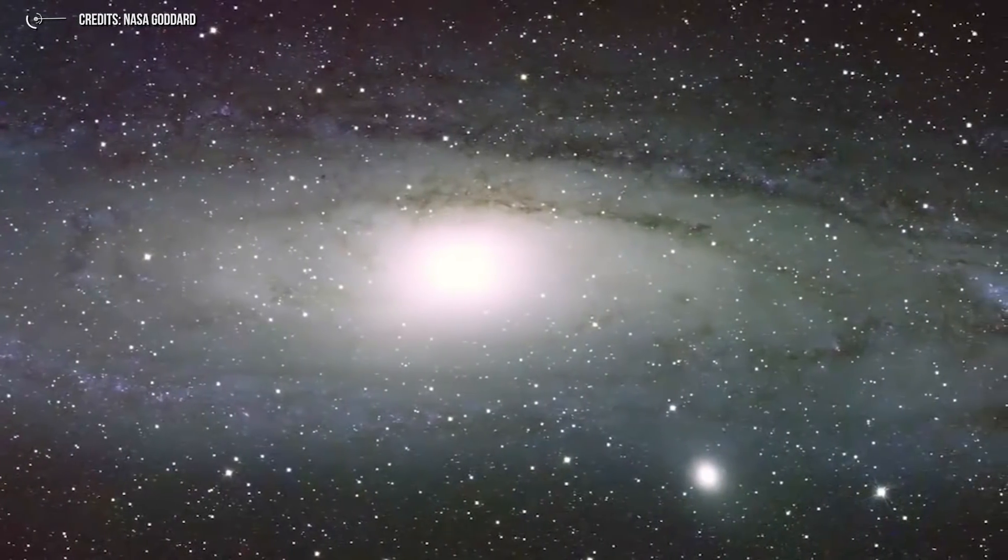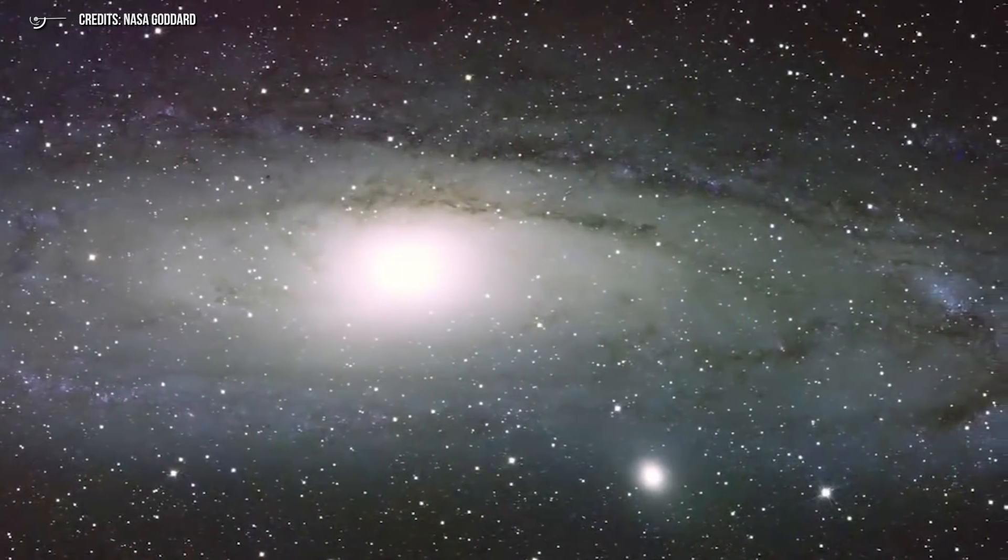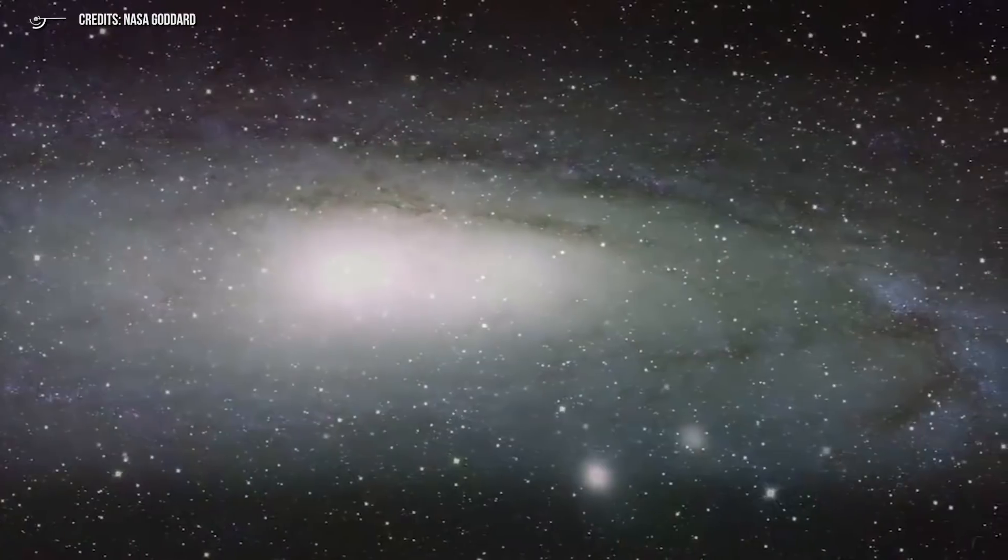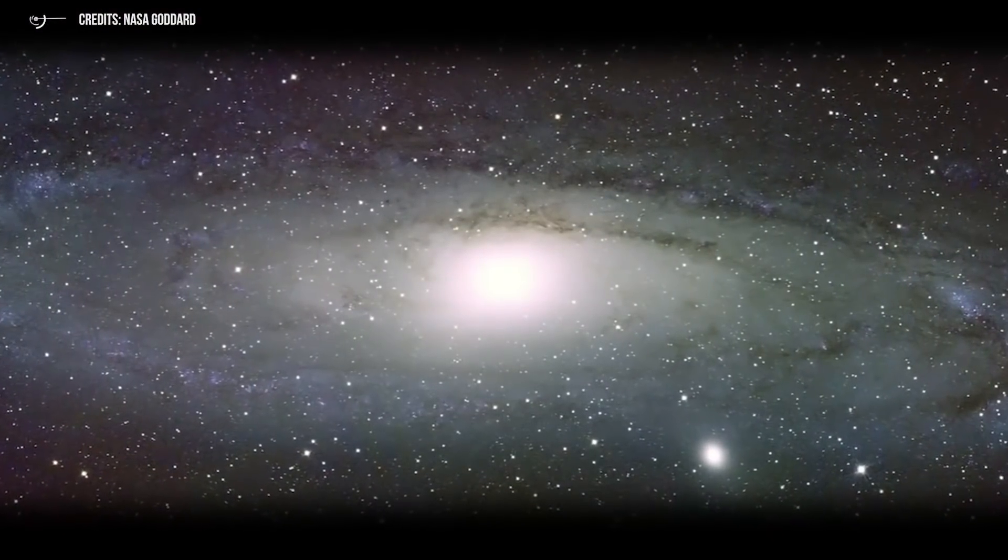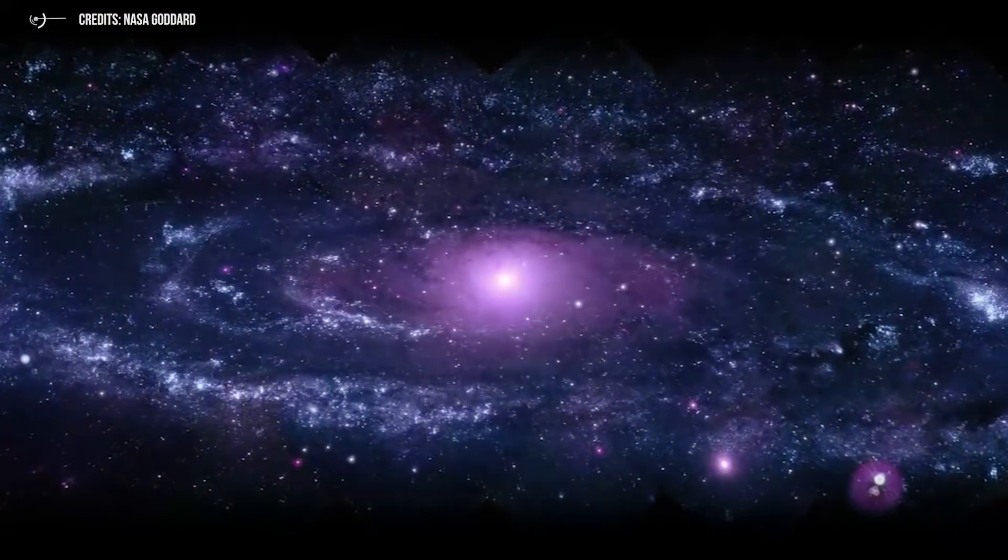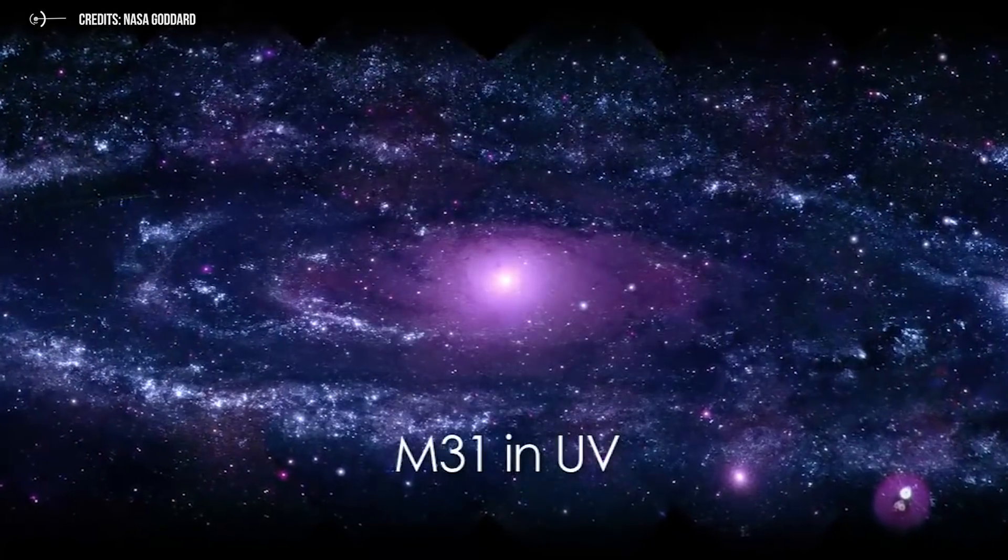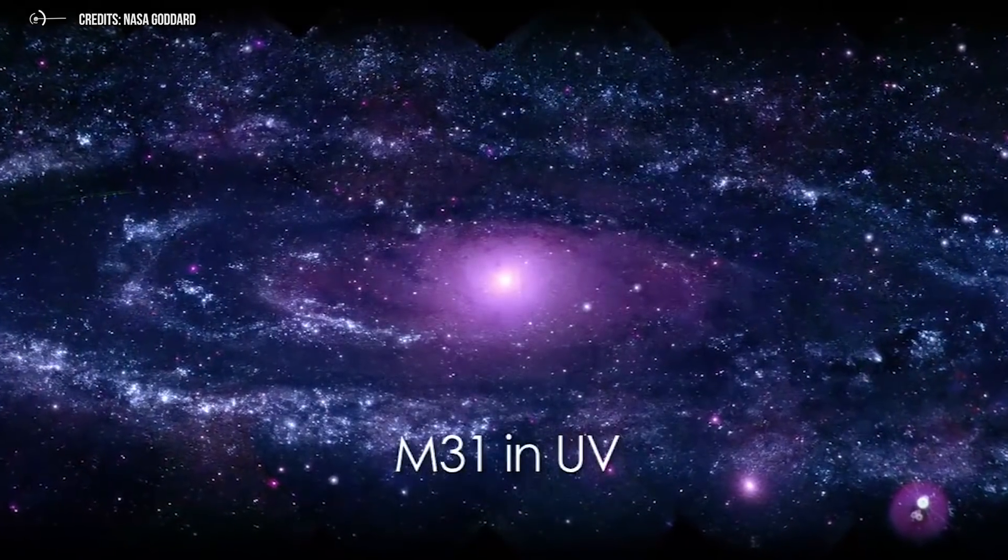The constellation of Andromeda is called after the Andromeda princess, a mythological character in ancient Greek culture. Of course, as you've probably heard, the Andromeda constellation hosts the Andromeda galaxy, the nearest full-fledged galaxy to our own Milky Way.